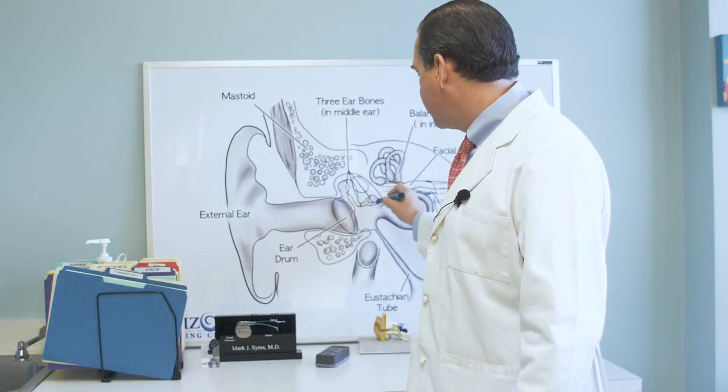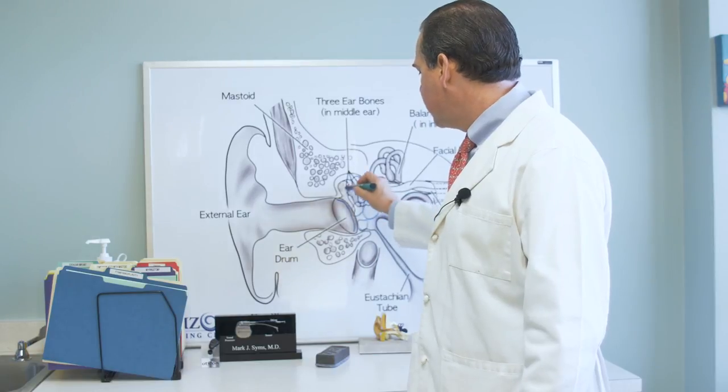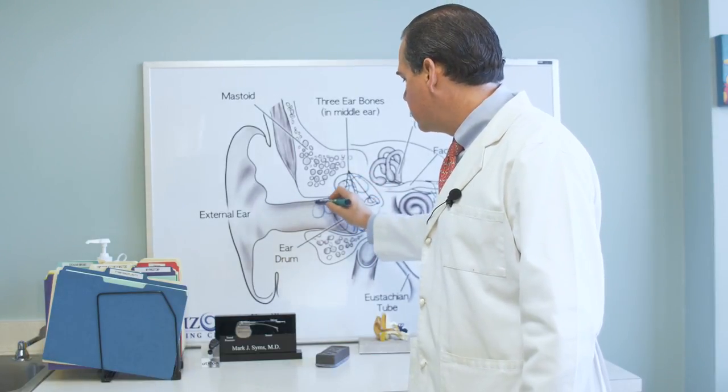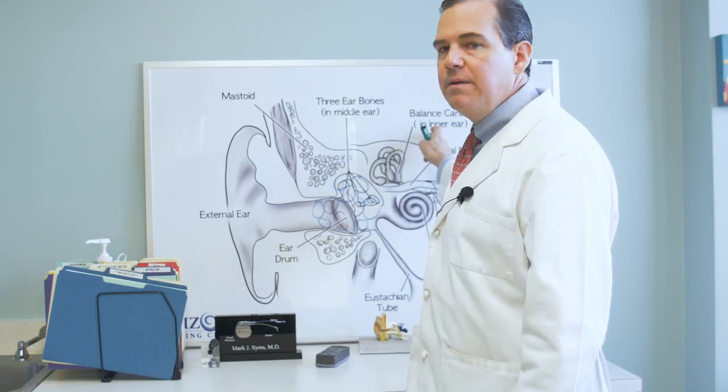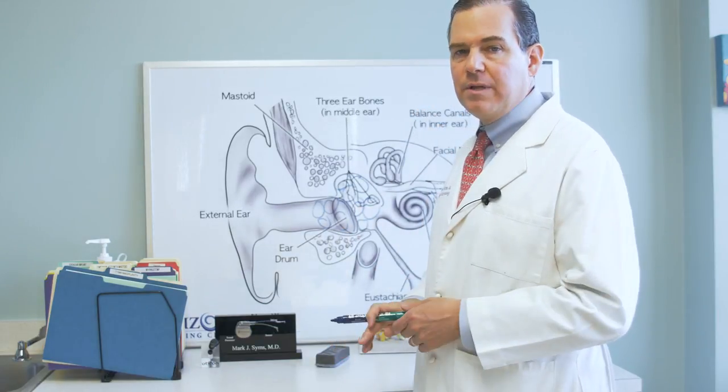A dissolvable packing will be put here in the middle ear, where the ear bones are, and here in the ear canal. This enables the patch in the eardrum to heal in place.